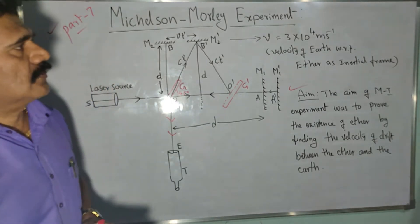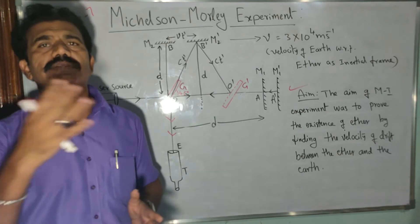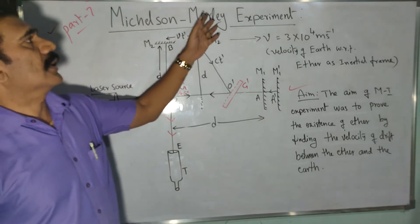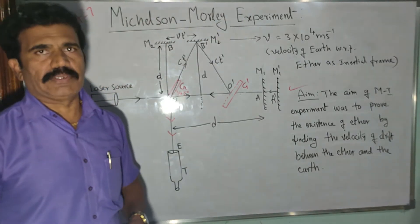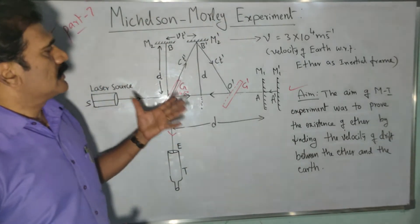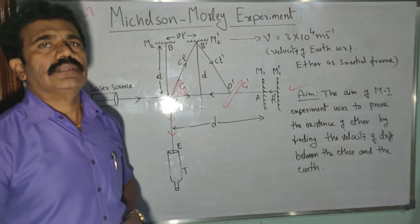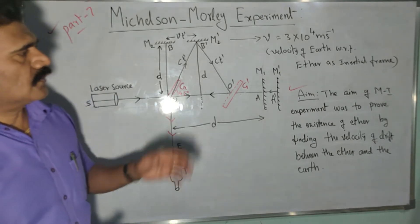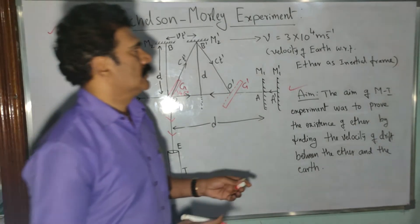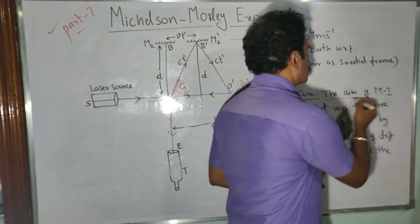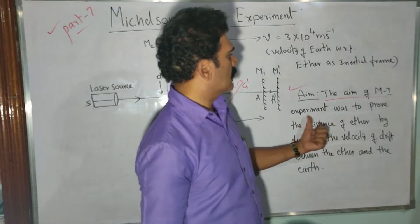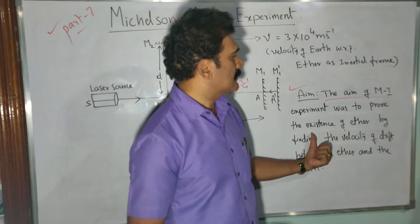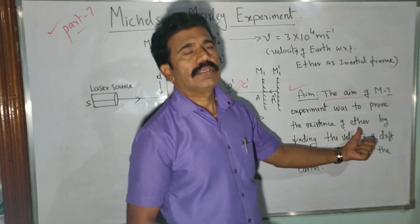To prove the existence of ether, many experiments were conducted. Out of those, the Michelson-Morley experiment was the most famous. The aim of the Michelson interferometer experiment was to prove the existence of ether — that is, to determine whether ether is present in space or not.